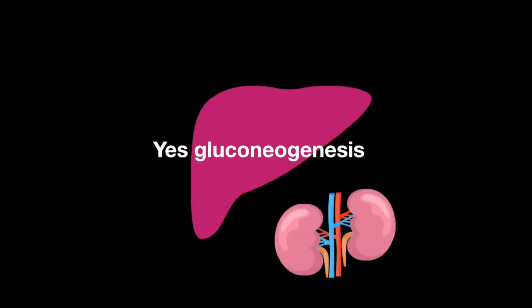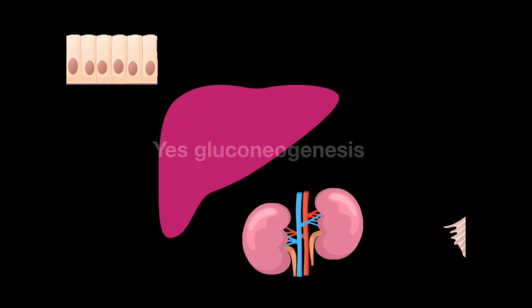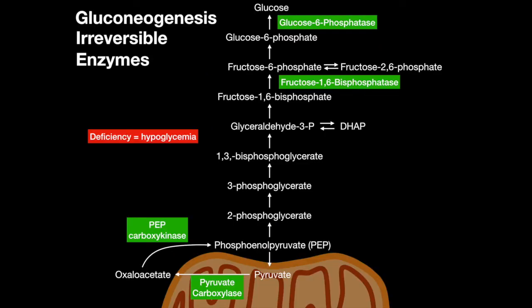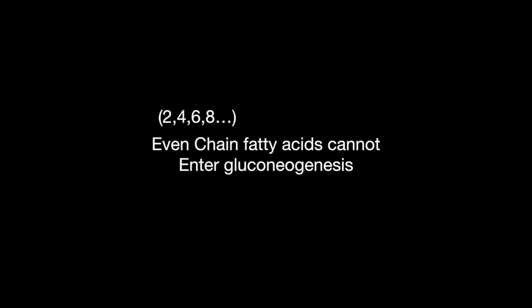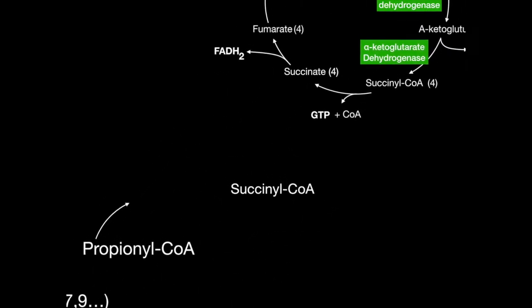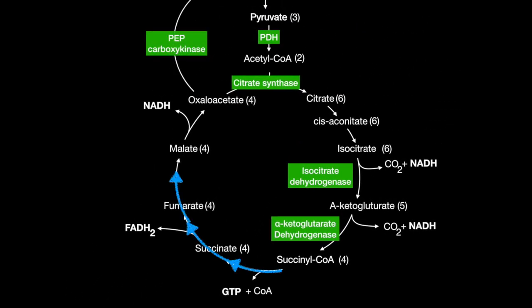Gluconeogenesis takes place primarily in the liver, but also the kidneys and epithelium of the intestine. Muscle does not contain glucose-6-phosphatase and does not participate in gluconeogenesis. A deficiency of the gluconeogenesis enzymes results in hypoglycemia. Even-chain fatty acids cannot enter gluconeogenesis, but odd-chain fatty acids can, because they create propionyl-CoA, which can enter the TCA cycle as succinyl-CoA, and then gluconeogenesis.